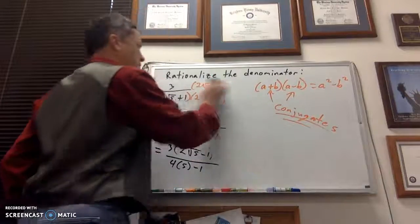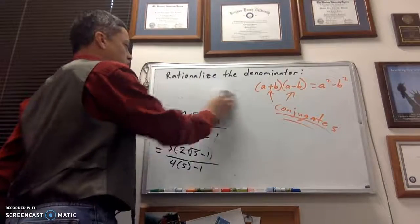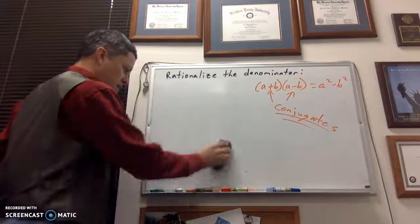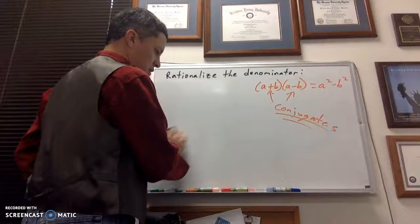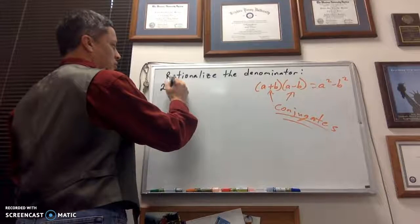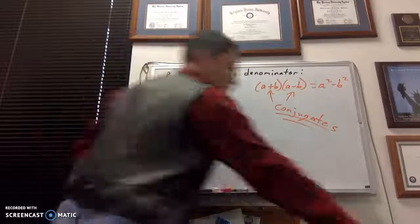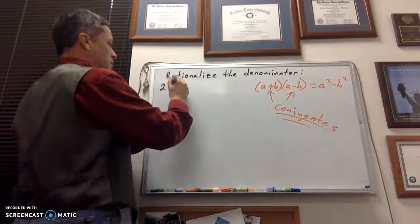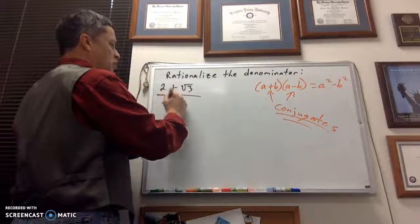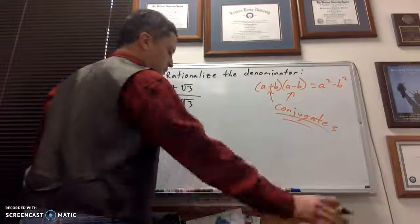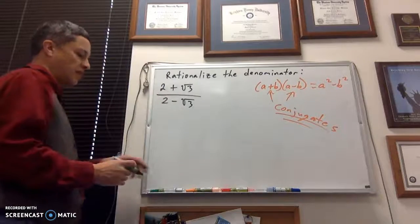Here's a tougher one. Suppose we had two roots, well, I don't make it too hard. So, let's go 2 plus the square root of 3 over 2 minus the square root of 3, and we need to multiply that out, or rationalize that denominator.